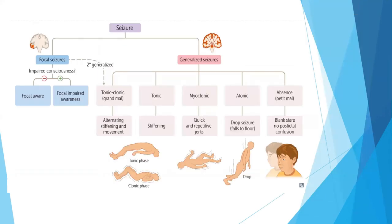Focal seizures can progress to secondary generalized seizures. If consciousness is impaired, it is a focal seizure with impaired awareness; if not, it is a focal aware seizure. What I want to highlight is the absence seizure: there is blank stare and no post-ictal confusion. Generally, the teacher complains to the parents that the patient has a blank stare and is not responsive during that time—parents do not generally notice these seizures.